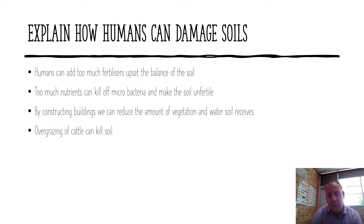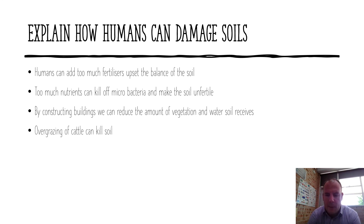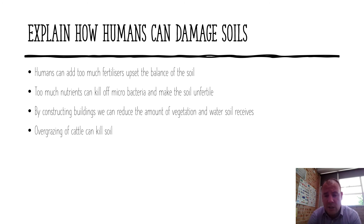We damage soils in a number of ways. Basically we upset that complex mixture by either adding too many fertilizers, or reducing the amount of nutrients, worms, and water getting to the soil by building on it, killing off vegetation, and reducing the amount of soil. How we use the land also matters — if we're putting too many cattle on the soil it will kill it eventually. That's called overgrazing. There are lots of different ways we damage soils and those ways are always changing.